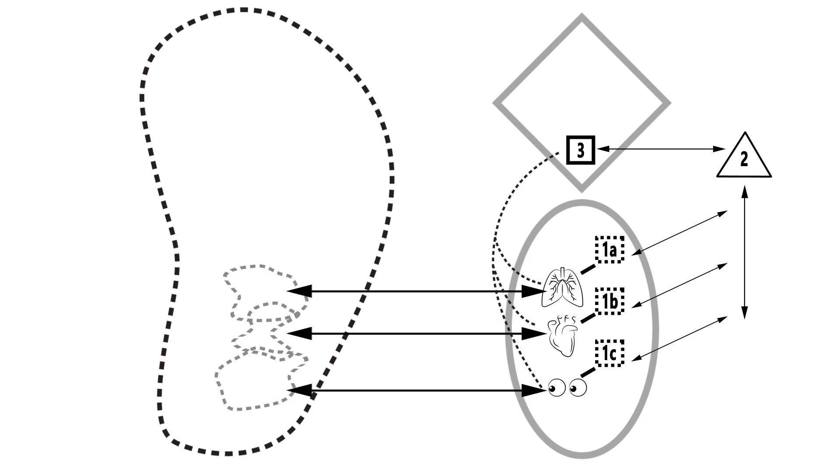System 3 is comparable to the medulla, cerebellum and pons of the brain. It maintains the operation of each system within System 1, as well as their interactions. Because it is able to view the organism in its totality, System 3 is uniquely qualified to help in the coordination of the day-to-day management of all operations.